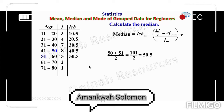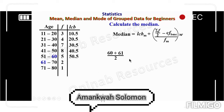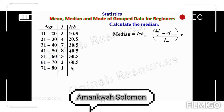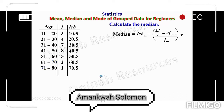We record 50.5 as the lower class boundary for 51 to 60. For 61 to 70: 60 plus 61 divided by 2 gives 121 divided by 2 = 60.5. For the last class interval, 71 to 80: 70 plus 71 divided by 2 gives 141 divided by 2 = 70.5, recorded as the lower class boundary of the last interval.